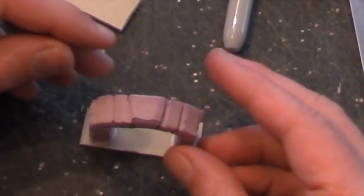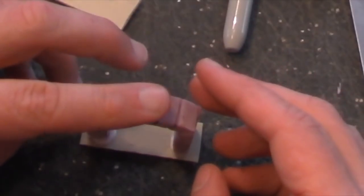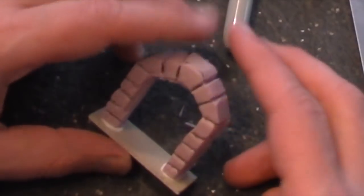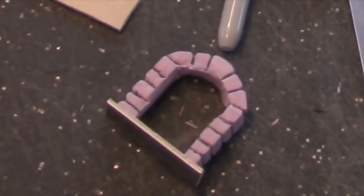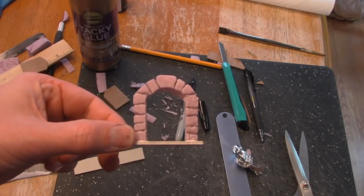Hot glue will damage the styrofoam, so I use tacky glue. You could also use Elmer's glue. And I glue it to the already adhesive side of the floor tiling. I let the glue dry overnight.